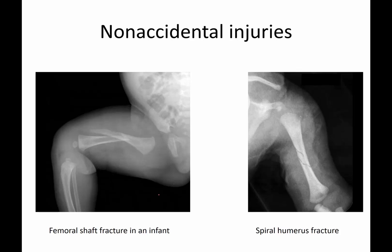Unfortunately, in children you also have to be on the lookout for non-accidental injuries. This is a femur and a humerus — different patients. When you have an infant, a non-ambulating individual, coming in with a long oblique femoral shaft fracture, you have to be concerned this is a non-accidental injury. There are rare conditions like osteogenesis imperfecta where this can occur, but in most otherwise normal children you don't get femoral shaft fractures in infants.